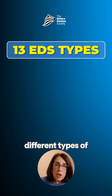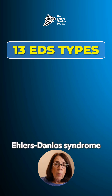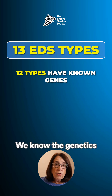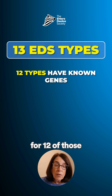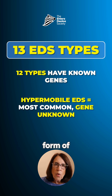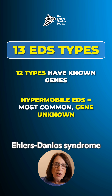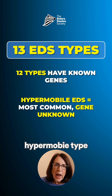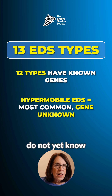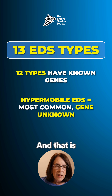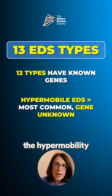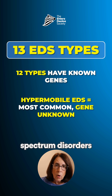There are 13 different types of Ehlers-Danlos syndrome. We know the genetics for 12 of those 13 types. The most common form, the hypermobile type, is the one type for which we do not yet know the underlying gene or genes, and that is also true for the hypermobility spectrum disorders.